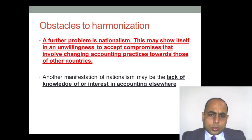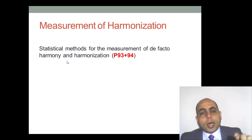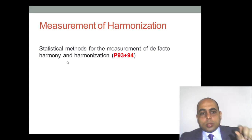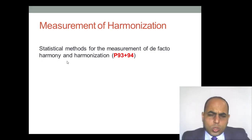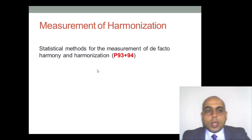We have differences between countries and we aim to minimize them. To measure that harmonization, we have statistical methods for the measurement of de facto harmony. For the details of these measurement methods, you can refer to pages 93 and 94. This is enough to clarify the ideas of the first section: harmonization reasons, obstacles, and measurement of harmonization.